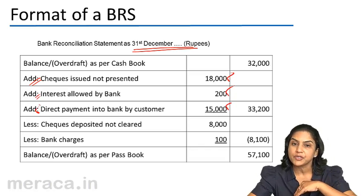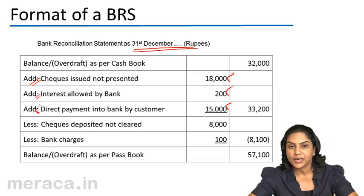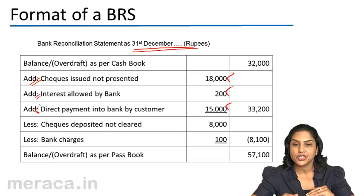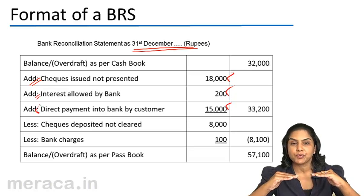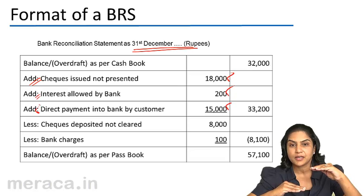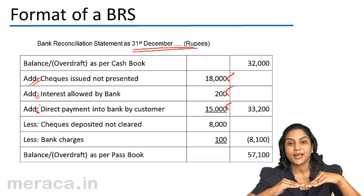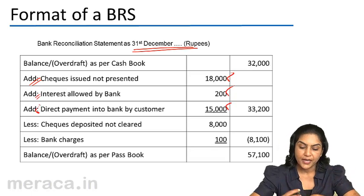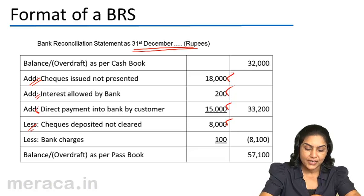Next, we have cheques deposited but not cleared. When we deposit a cheque, we immediately record the entry in the cashbook, so the cashbook balance has gone up. The passbook balance remains here. In order to arrive at the passbook balance from the cashbook, we deduct cheques deposited but not cleared.